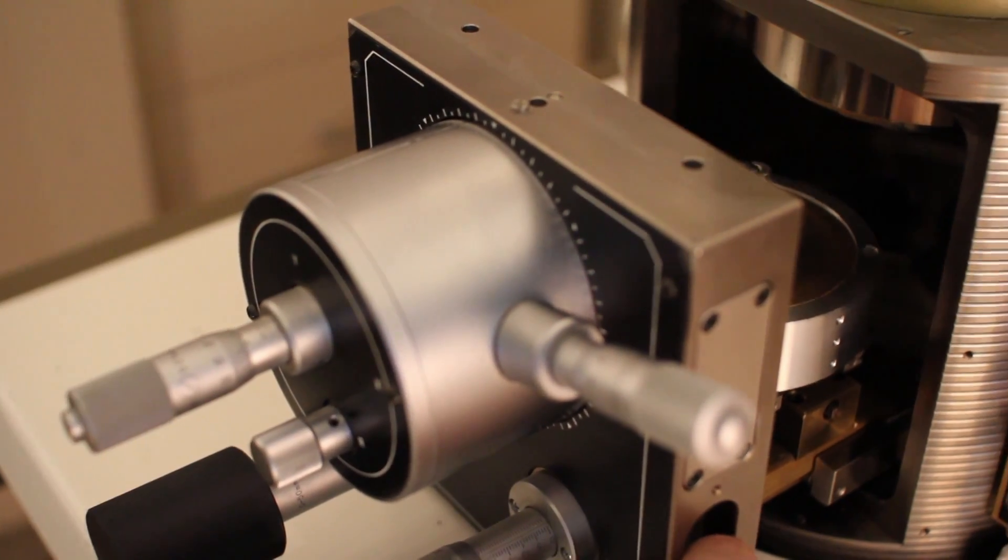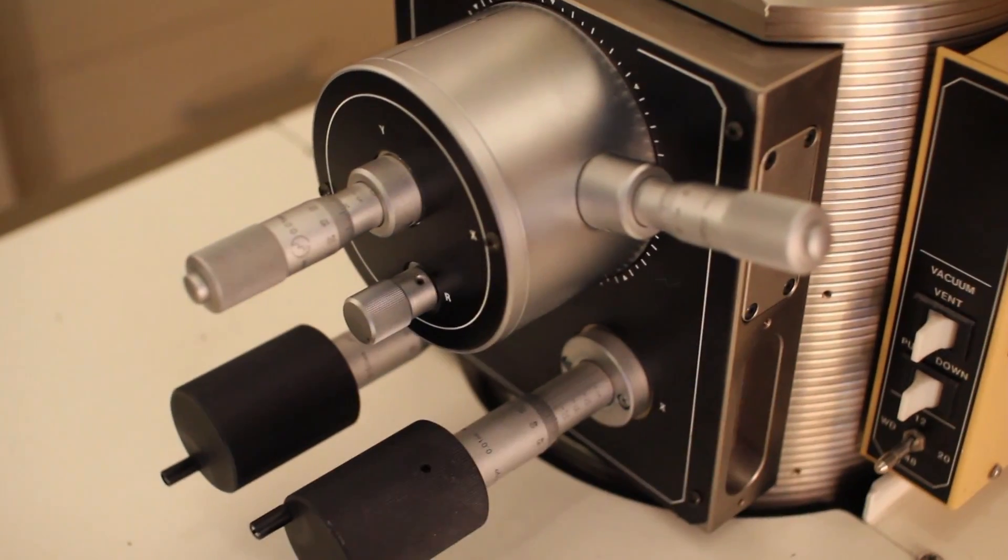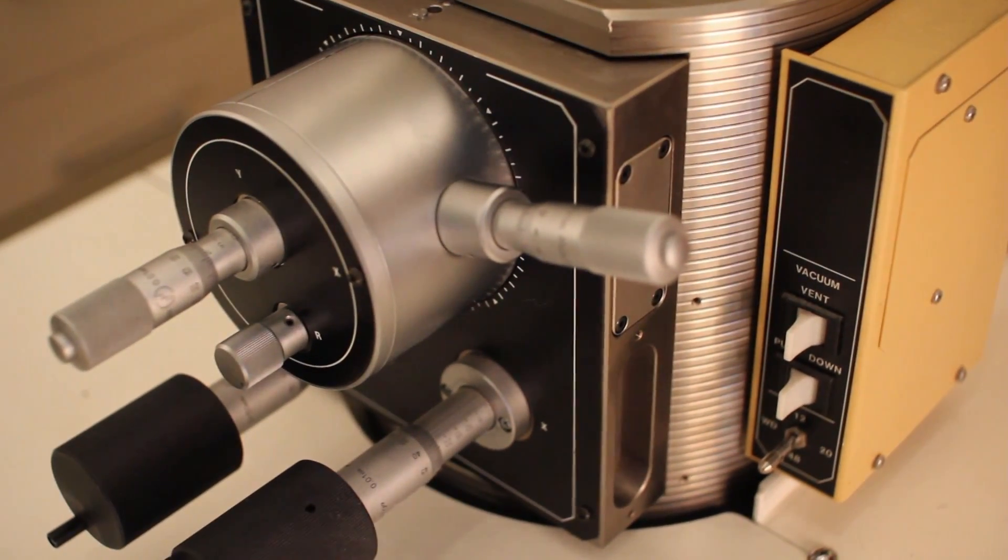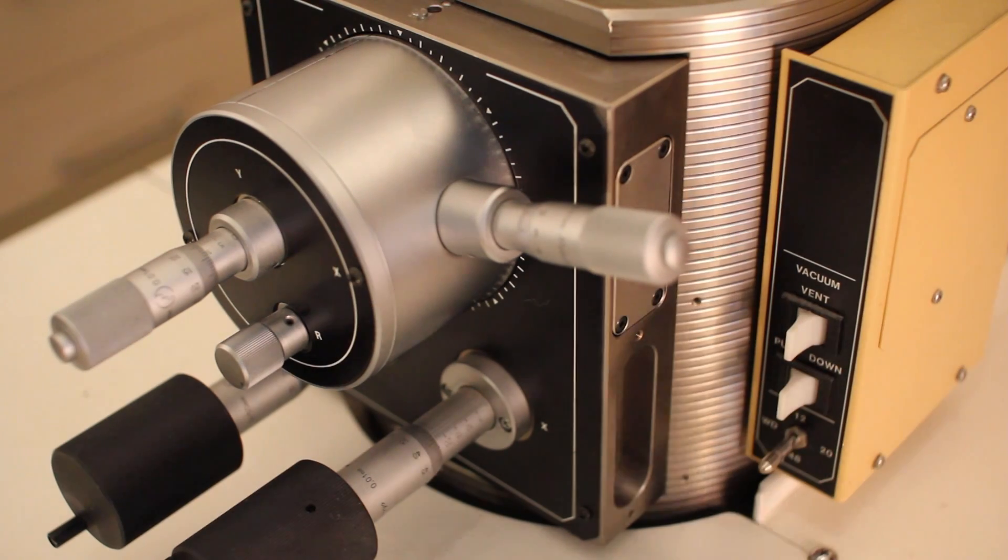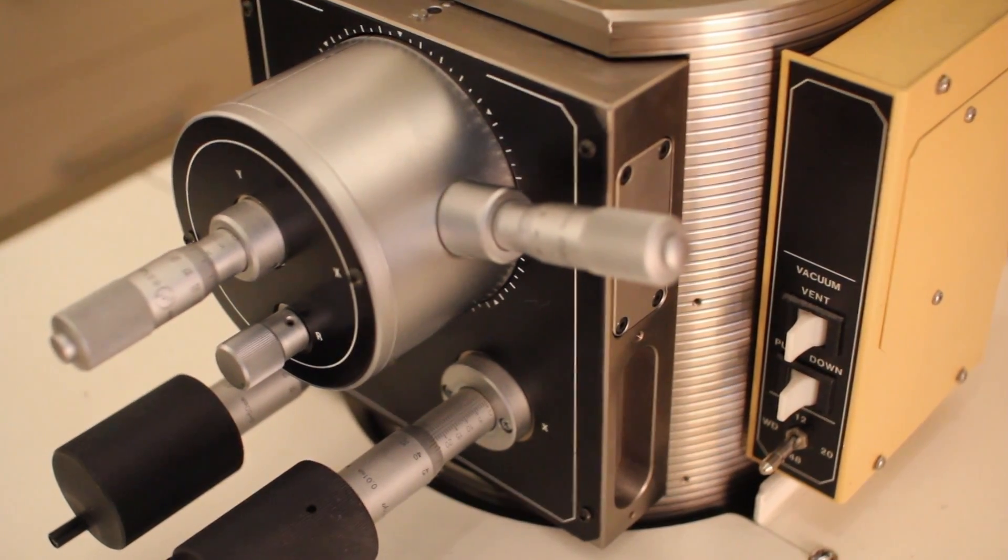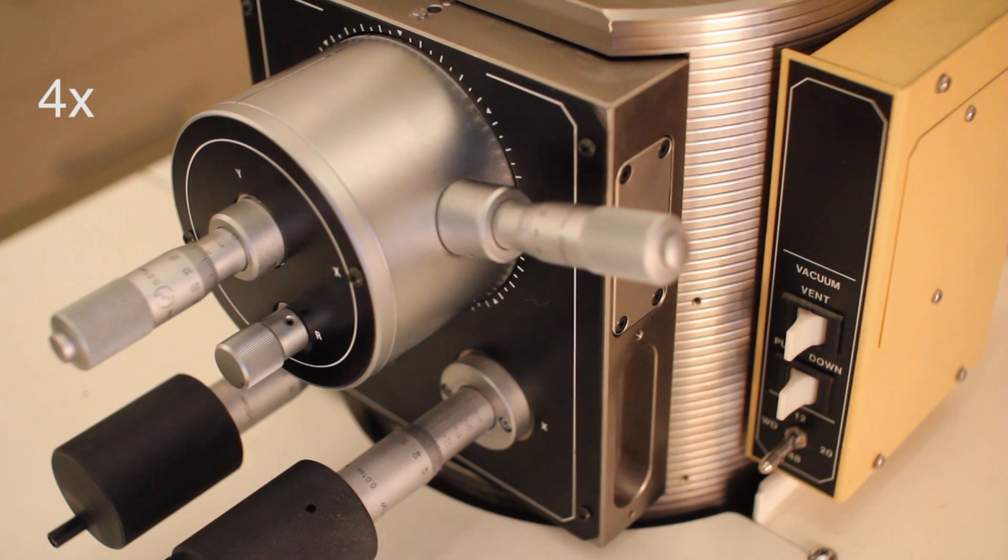Pumping vacuum in the chamber is then achieved by closing the door and keeping it shut by hand while pressing the pump down button. Now when the diffusion pump is already warmed up, it only takes about 2 minutes to reach the high vacuum required to operate the microscope.